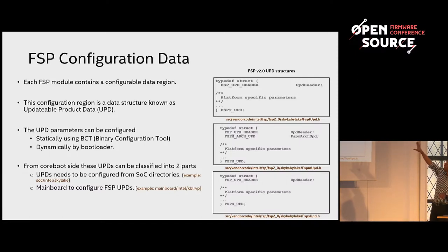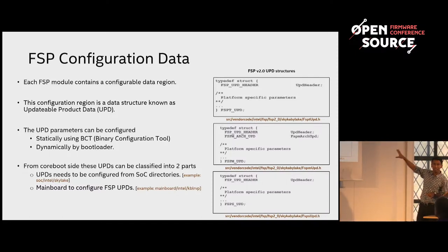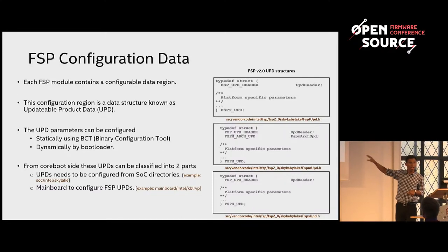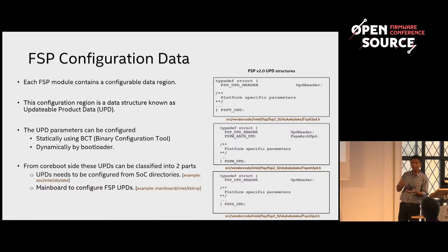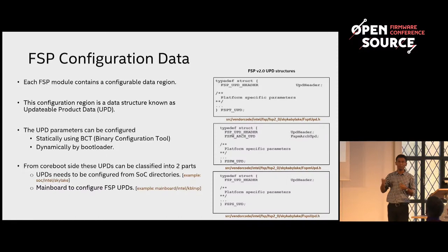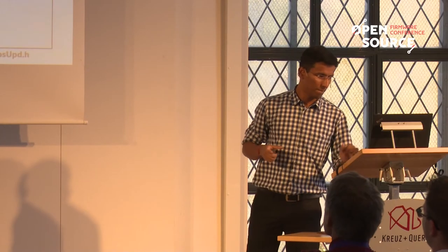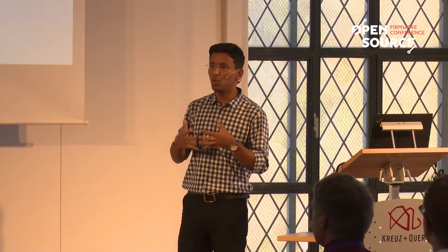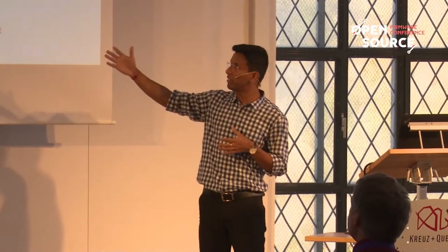Here are samples of the FSP UPD headers. If you go to the vendor code, you may find those there. Just make sure you have an FSP binary with a compatible version of the FSP UPD headers, because the binary has to be compatible with your FSP header. Once you have your FSP binary, your FSP header, and your bootloader configured with all the policy requirements, this is how coreboot and FSP interface typically works.